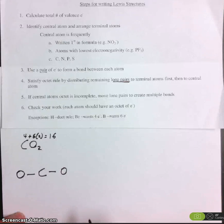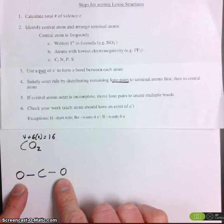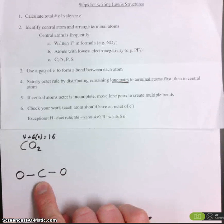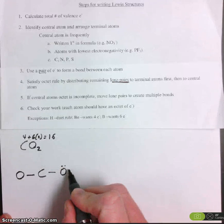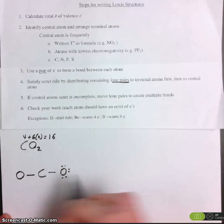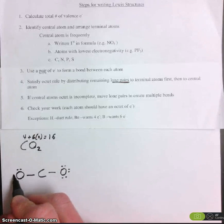Step number four says, distribute remaining lone pairs to terminal atoms first, then to central atom. We have 12 left. Here we go. Two, four, six, eight, ten, and twelve.